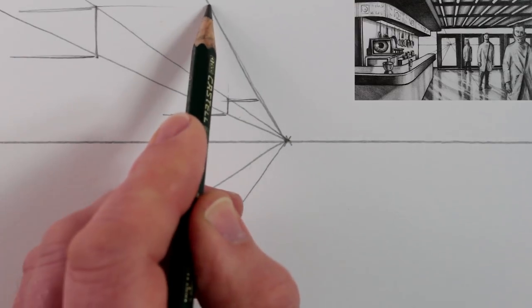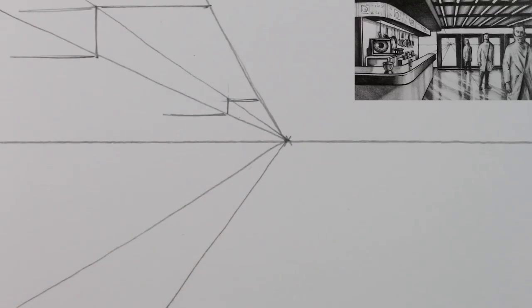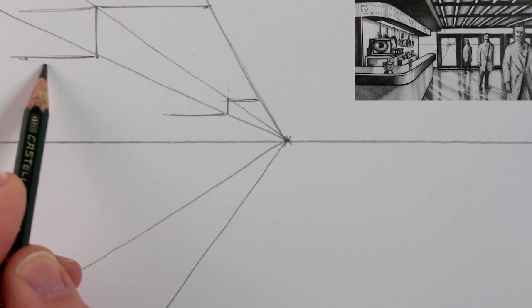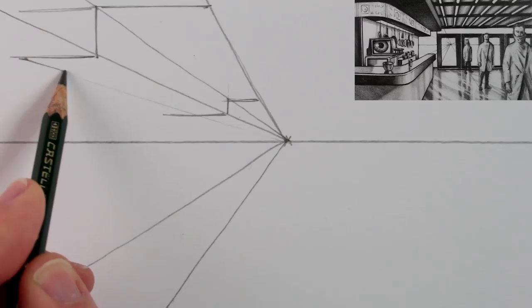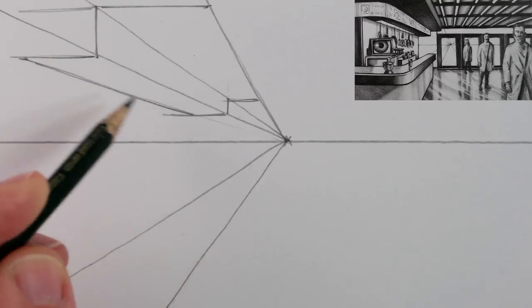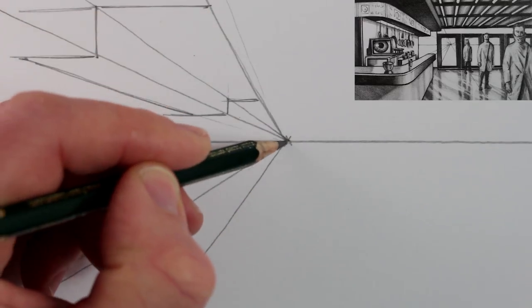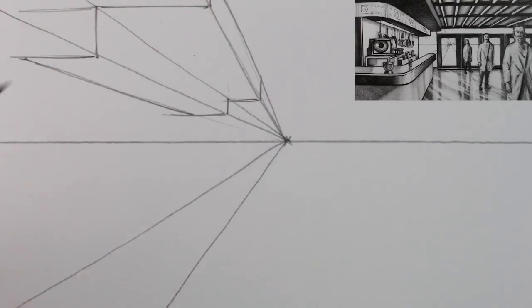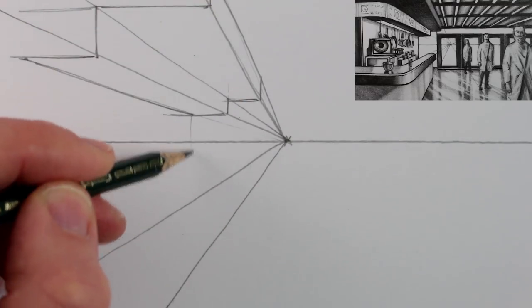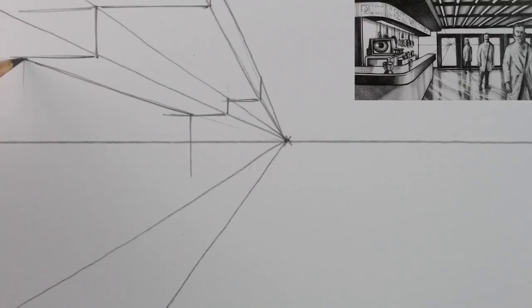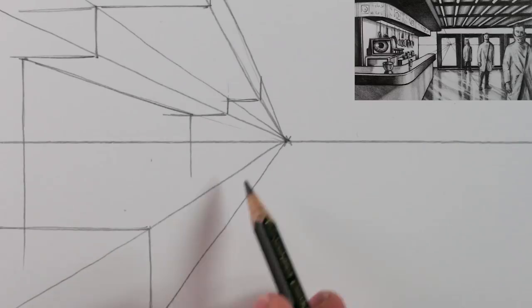Now draw a diagonal line for the top of the back wall of the bar, and we can give the overhang a thickness here too. Draw two more vertical lines for the back and front of the wall of the bar. Now we can draw a vertical line in the foreground for the corner of the bar.